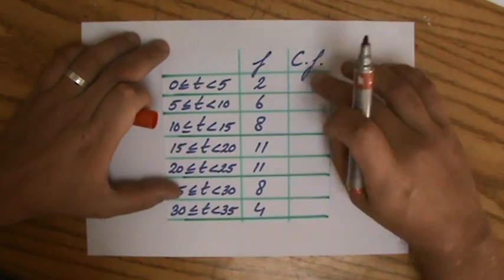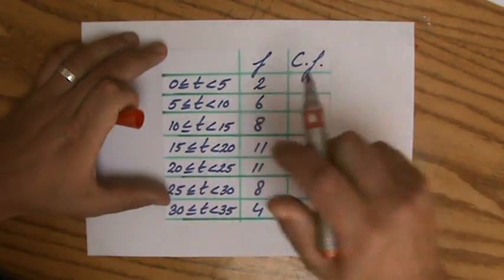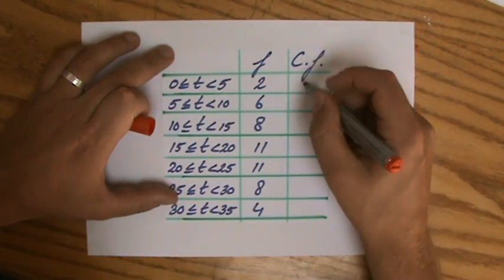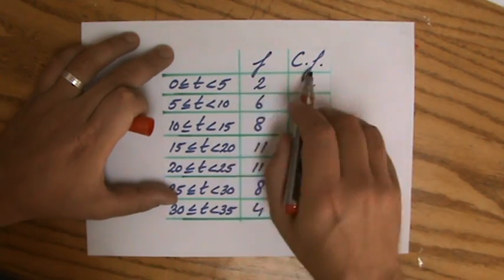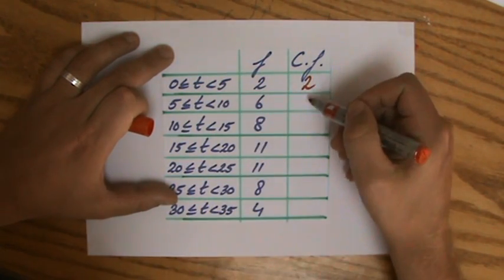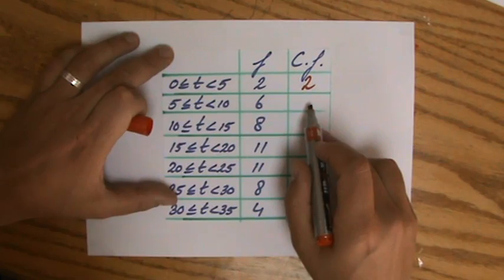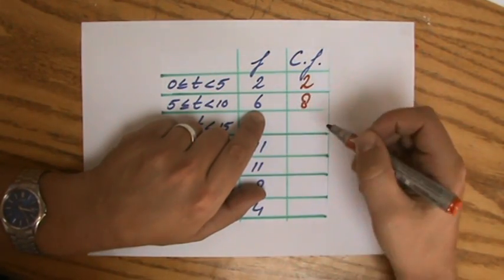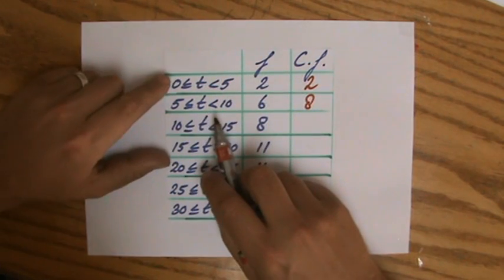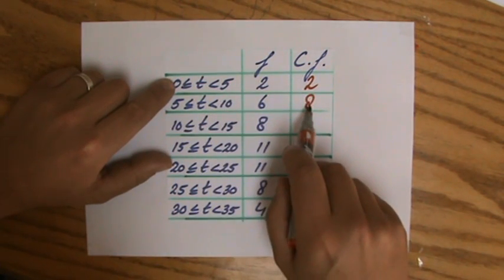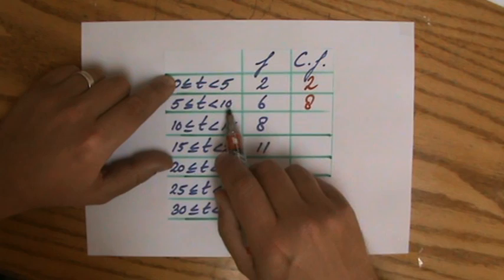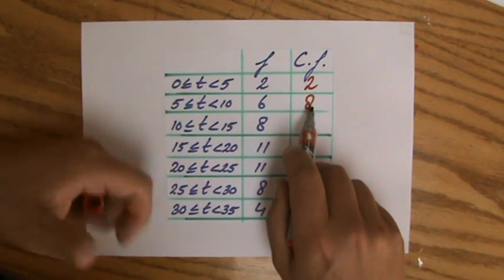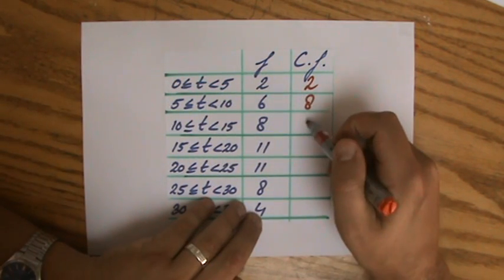I have a different column here: CF, cumulative frequency. In total, at the beginning you've got to start somewhere - it is two. But for my next row it is not going to be six - no, cumulative, so adding, it is two plus six, so it is eight. From zero to ten I'll have eight students.